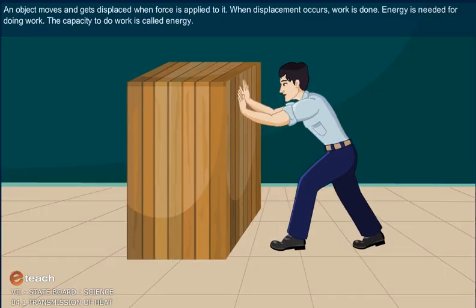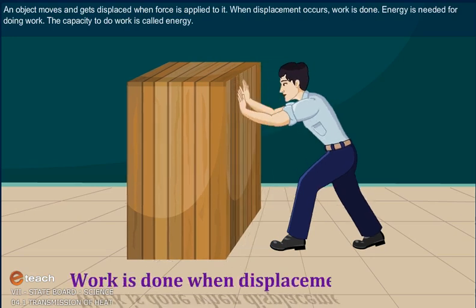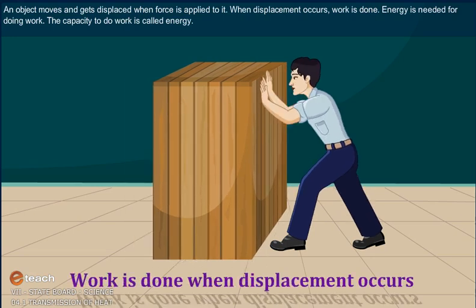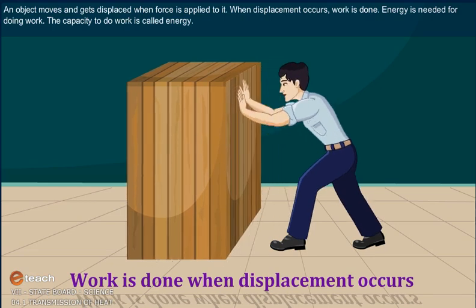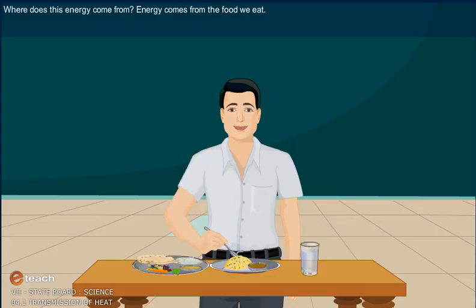An object moves and gets displaced when force is applied to it. When displacement occurs, work is done. Energy is needed for doing the work. The capacity to do work is called energy. Where does this energy come from? Energy comes from the food we eat.